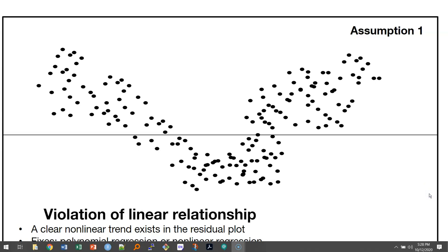This video will talk about violations of regression assumptions and how we can spot them. This example would be a violation of the linear relationship—that is, the data are not linear, but we're trying to use simple linear regression to understand trends.